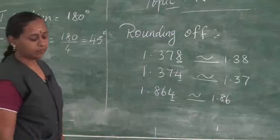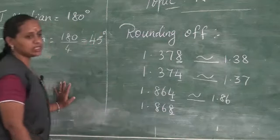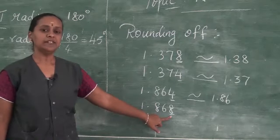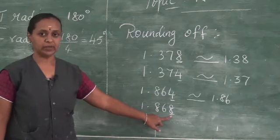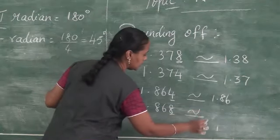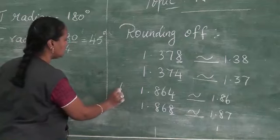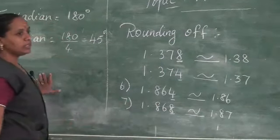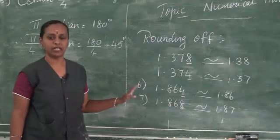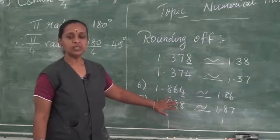The seventh sum: round off 1.868 to the last 2 decimals. The last digit is 8, which is greater than 5. So we increase the preceding digit by 1 and write 1.87. There are no special formulas for rounding off — you just need to know the rule: if the digit is less than 5, neglect it; if it is 5 or greater, increase by 1.